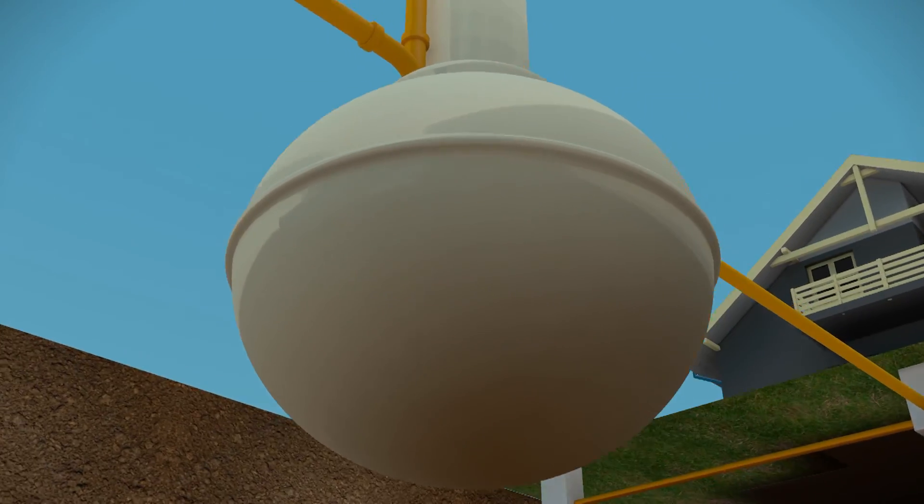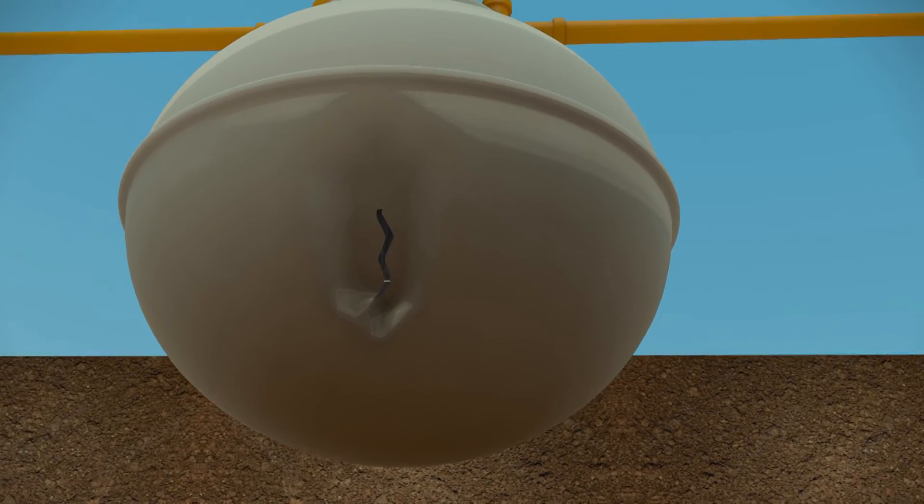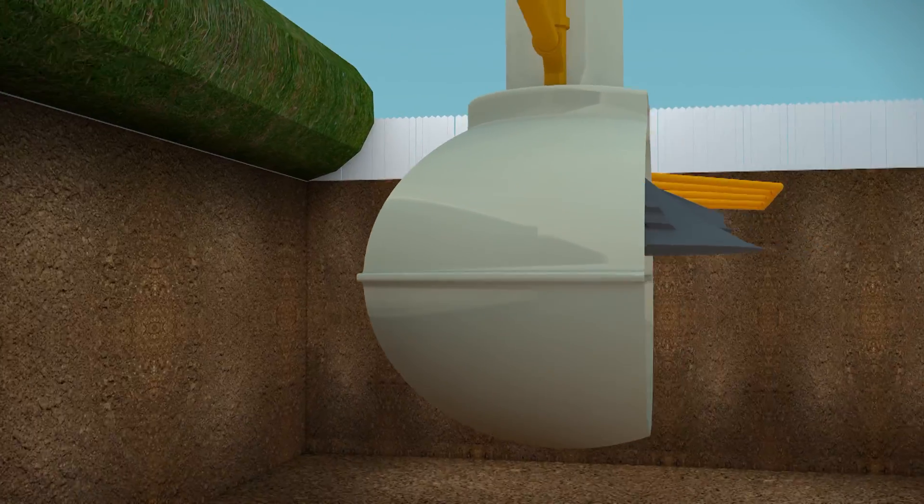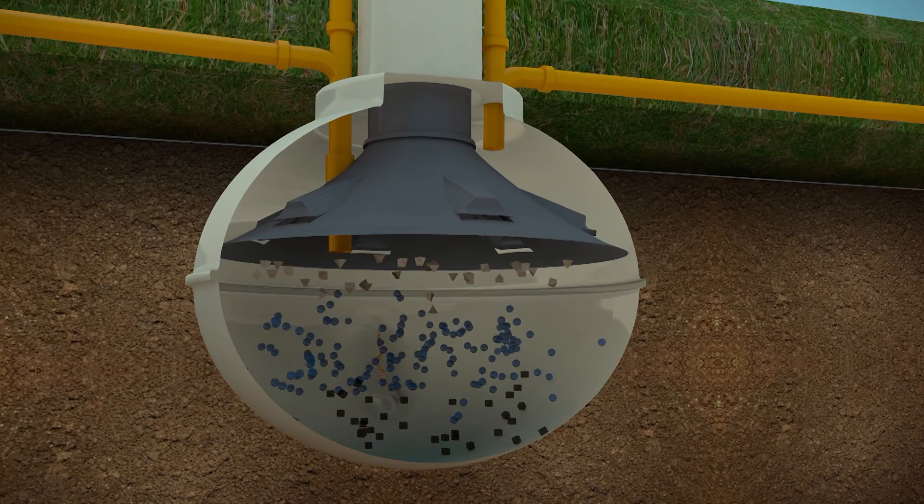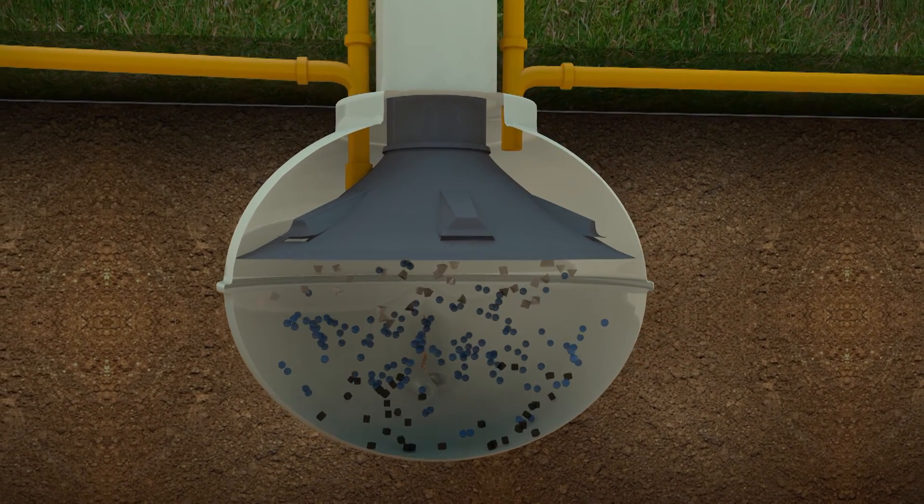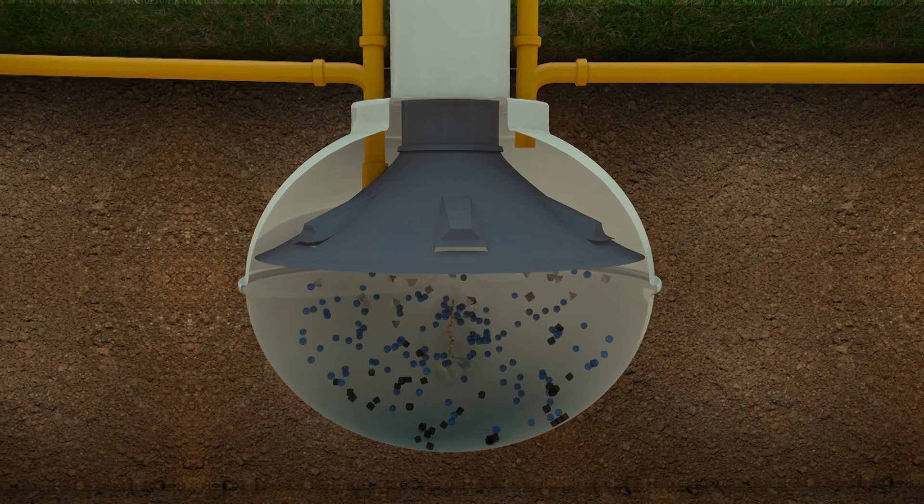If the structure of the septic tank is compromised by an external force, groundwater could be forced into the tank via a breach in the tank wall. The uncontrolled inflow of groundwater causes turbulence of the otherwise quiescent conditions, causing the originally settled matter to go back into suspension and ultimately is discharged into the soak away.